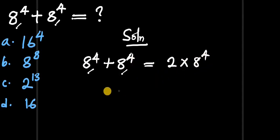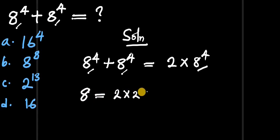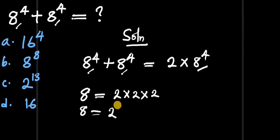Now let's concentrate on 8 to the power of 4. 8 on its own equals 2 times 2 times 2: 2 times 2 is 4, and 4 times 2 is 8. So we can say that 8 equals 2 to the power of 3, because we have 1, 2, 3 — so 8 equals 2 to the power of 3.